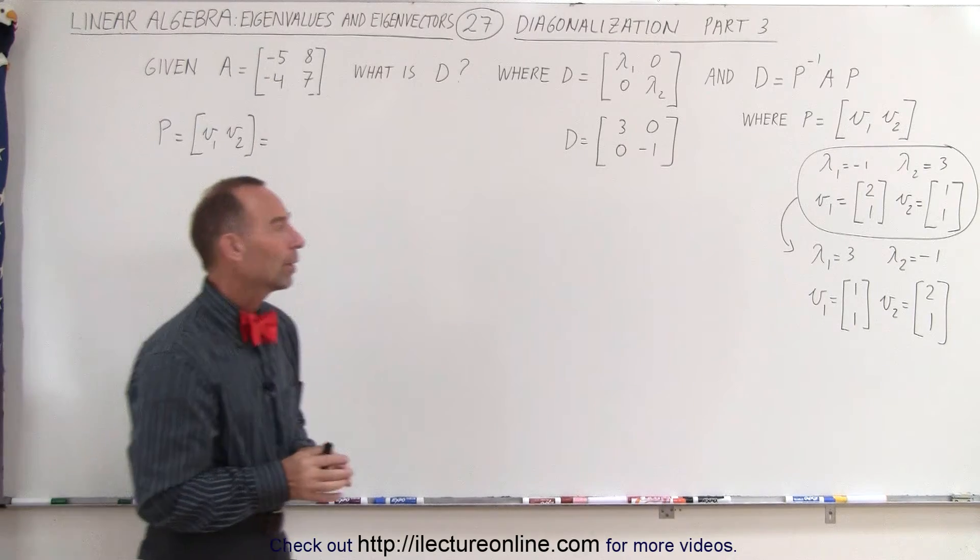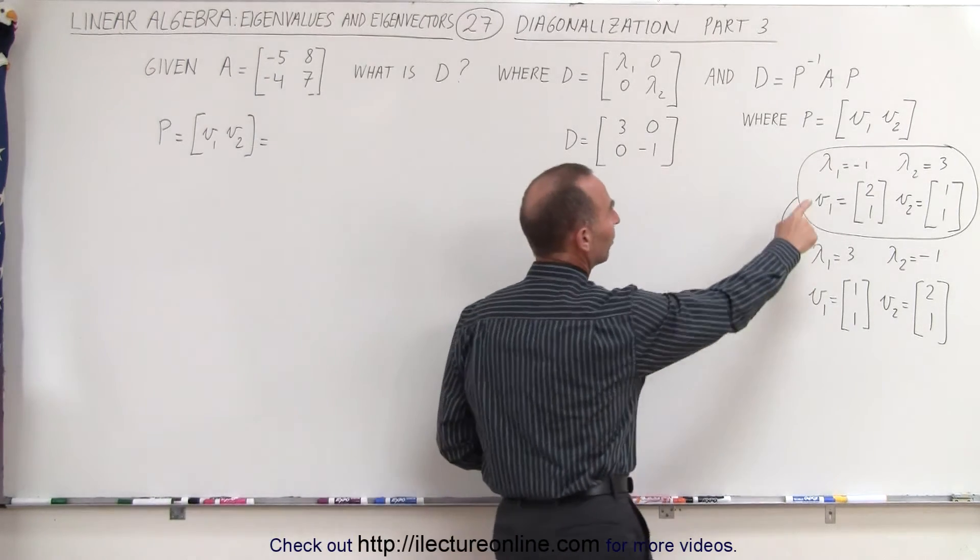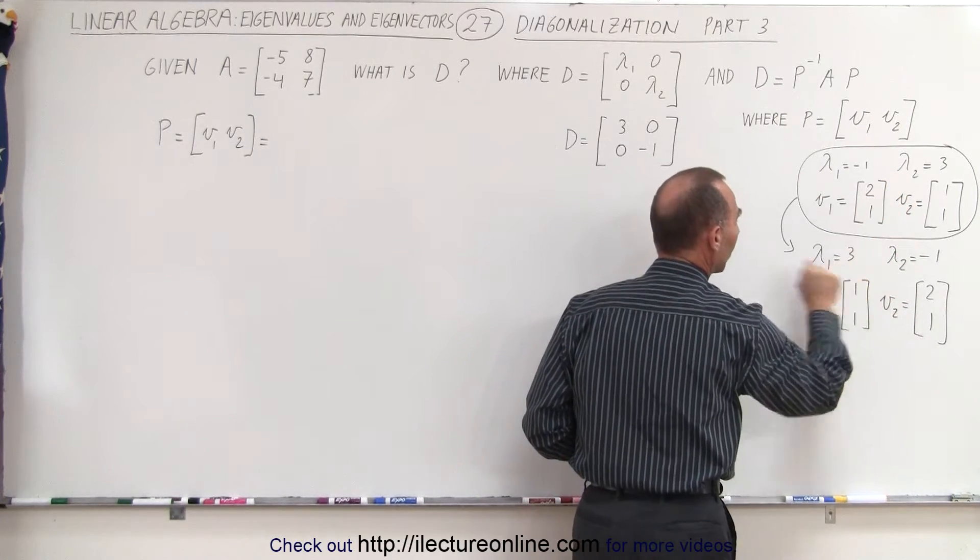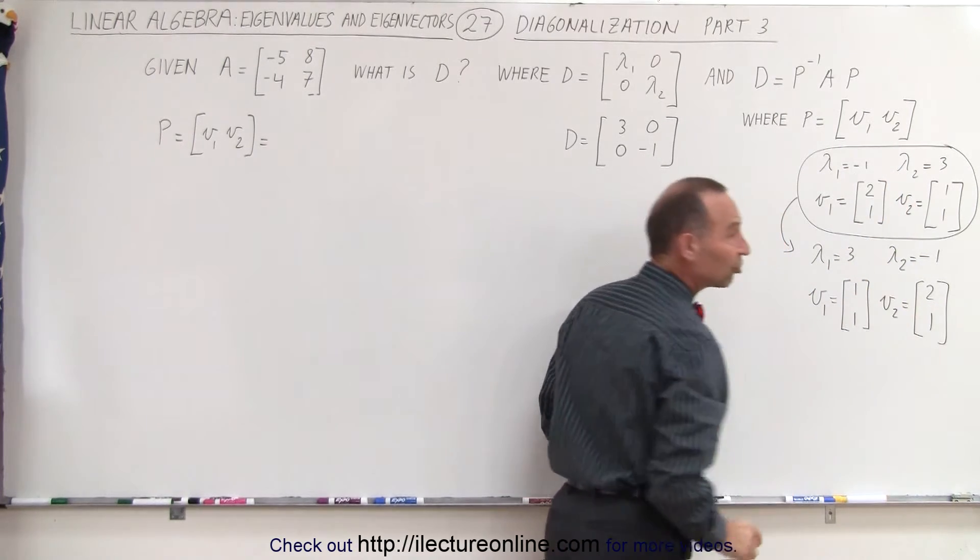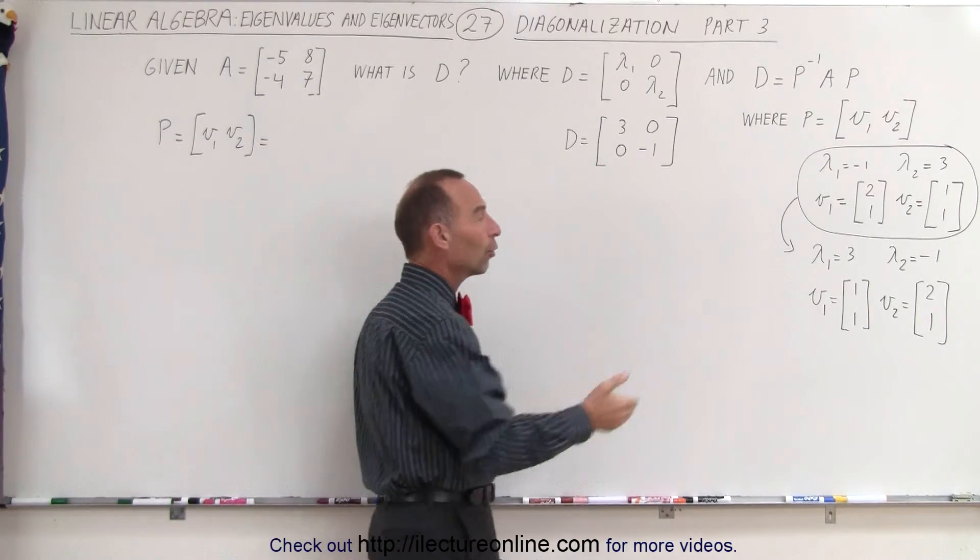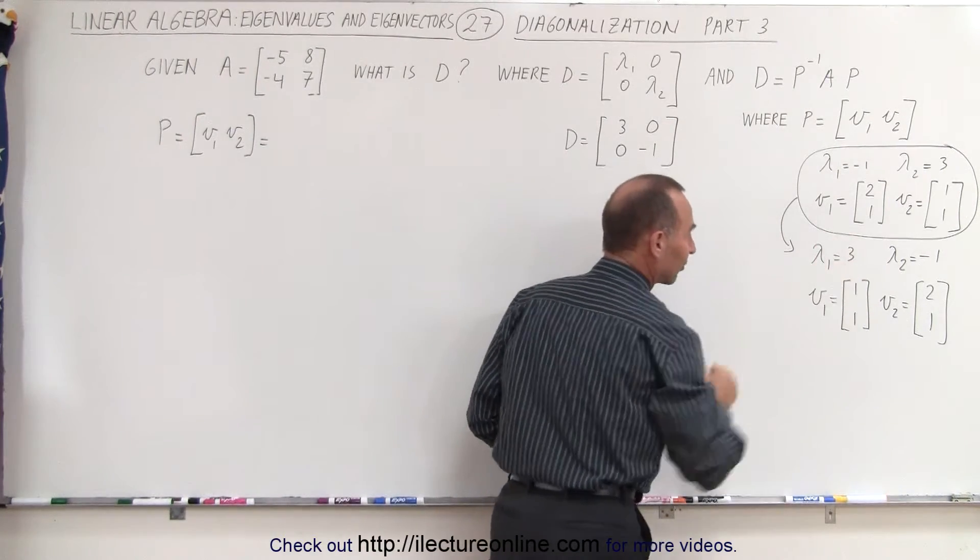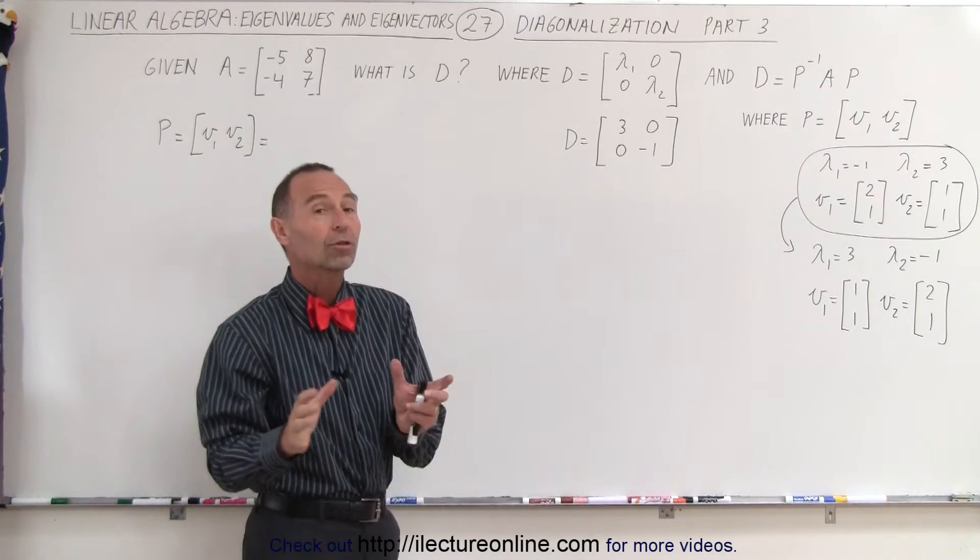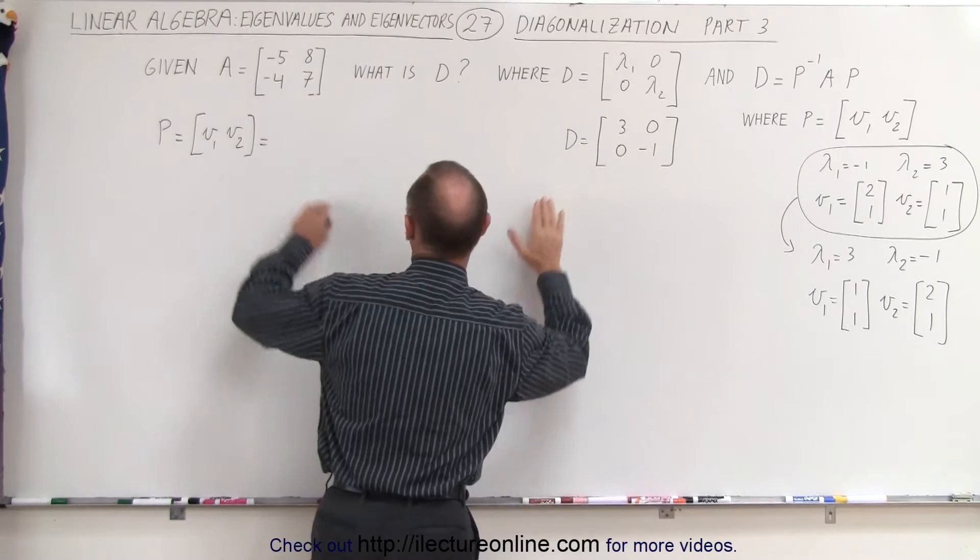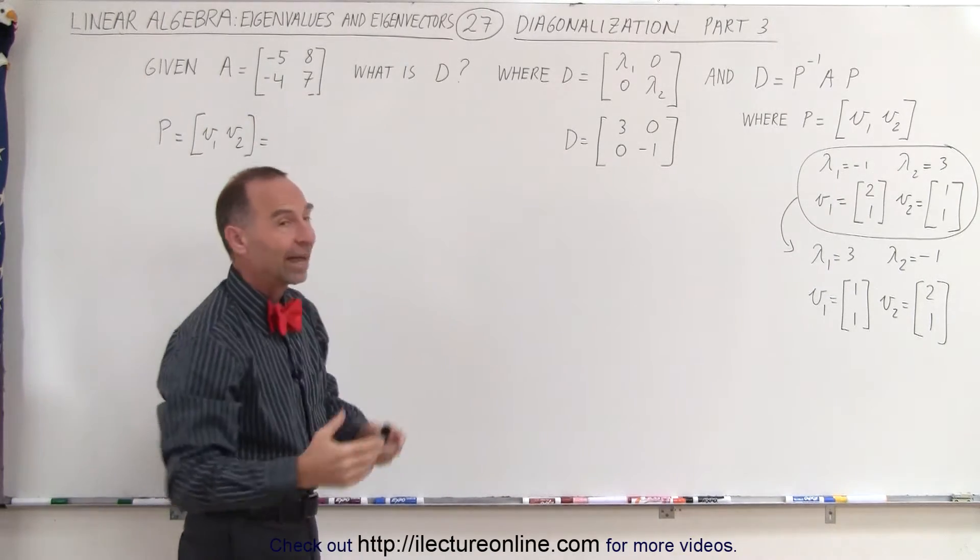But this time what we called eigenvalue 1 is now eigenvalue 2, and what we called eigenvalue 2 is now eigenvalue 1, and of course we also exchanged the eigenvectors so that we have the corresponding eigenvalues and eigenvectors in the same location. But it should not make any difference. We should still be able to find the diagonalization of our original matrix and get the exact same result.